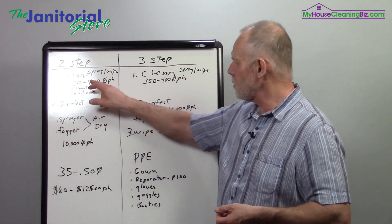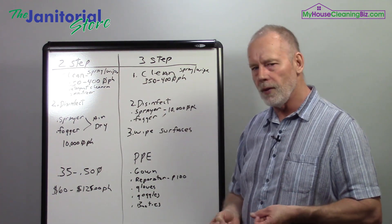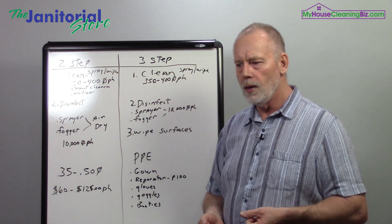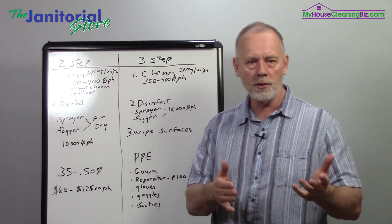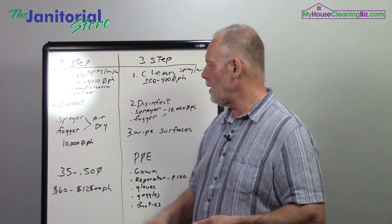Now the production rates of doing that type of work is around 350 to 400 square feet per hour. So that's an average. Some locations may be slower, some may be higher, but that's the average that we're getting.